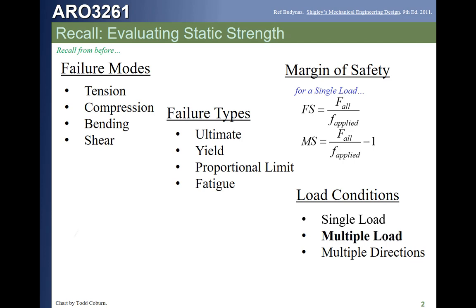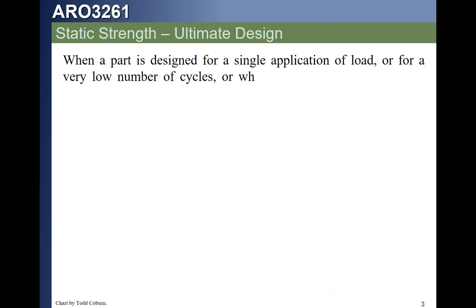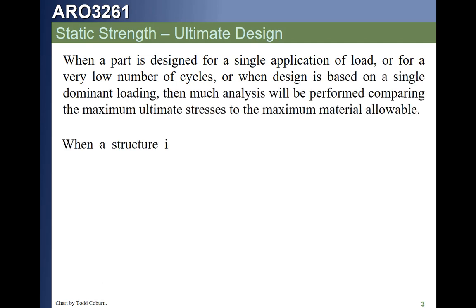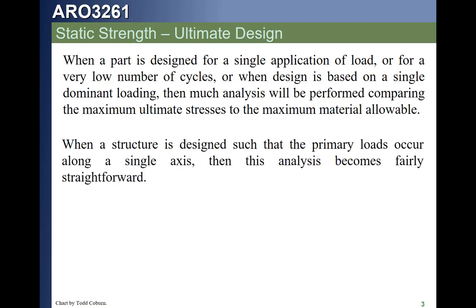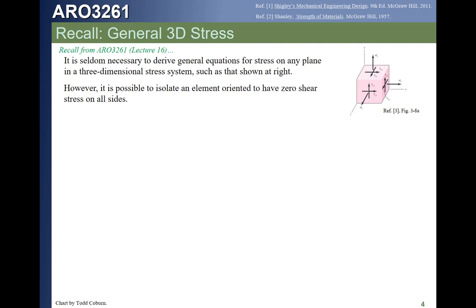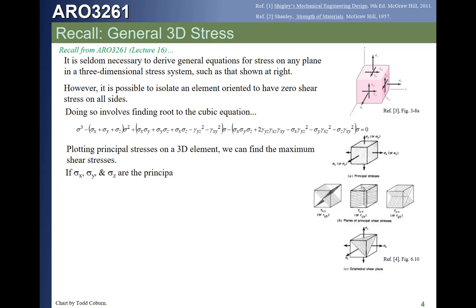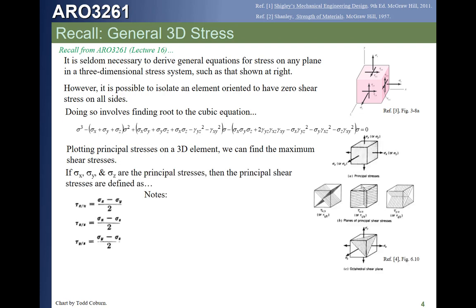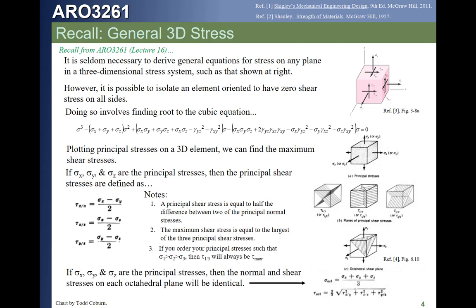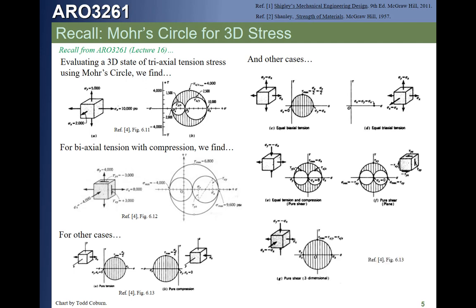We've been focusing on the single load and are about to start looking at multiple loads in more detail, kind of like we did for principal stresses. What our failure theories do is propose different ways of combining stresses. When we have stresses on more than one face of an element we get stresses in all three directions, and we saw with Mohr's circle how a three-dimensional stress state is written and how principal stresses and maximum shear stresses are found by taking half the difference between the stresses on the different faces.